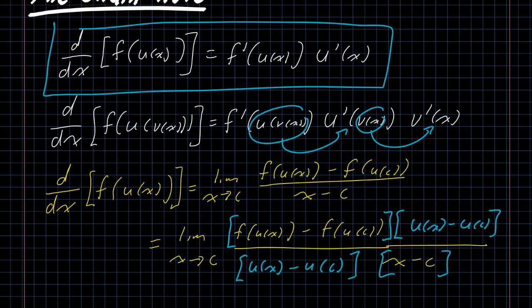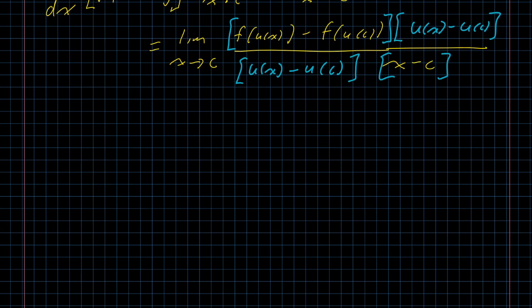Starting off here, you see we're back to the x approaches c limit definition of the derivative. It's a little bit easier to work with. And then in the second step, I do something crazy. I multiply the numerator and denominator of the fraction by u of x minus u of c, just because I can.